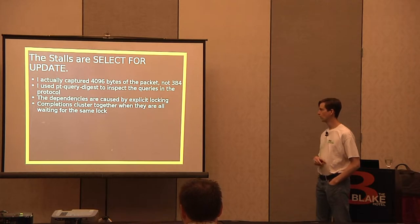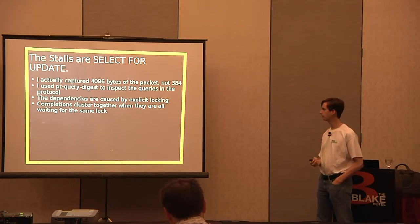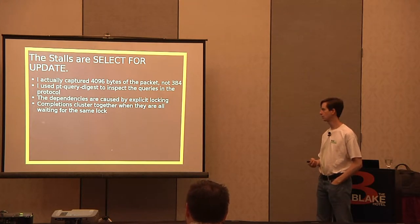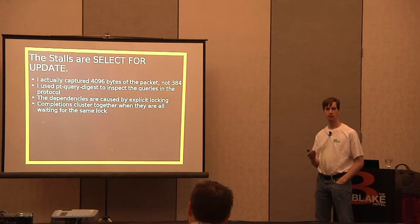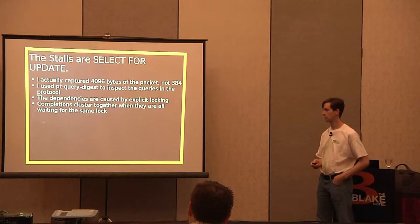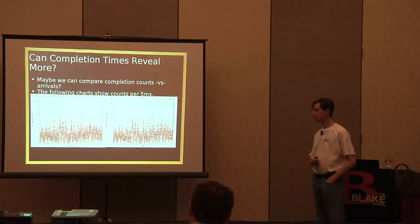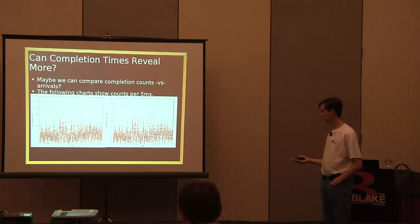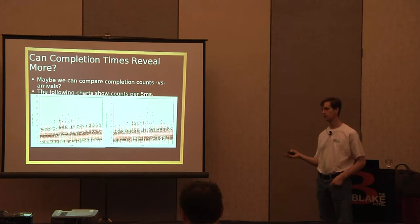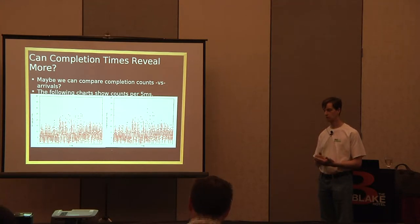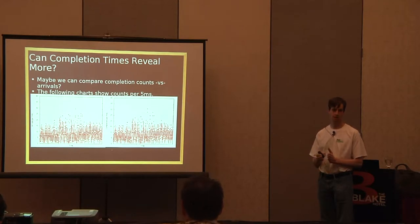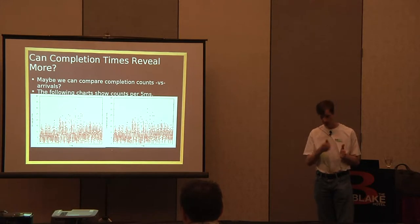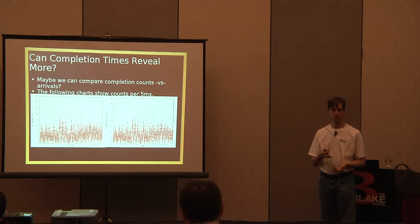Since completion times pull out the pattern so clearly, maybe we can see more information about completion times. The next stage of charts comes from running the tool in a mode where it groups things into time buckets, slicing the whole time series into little intervals. Within each interval, we count and aggregate statistics — summing response times, computing standard deviation, and so forth. The most basic thing is just counting the number of requests and responses in each interval. I'm counting arrivals on the left and completions on the right, graphed into five millisecond buckets.